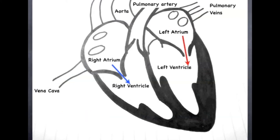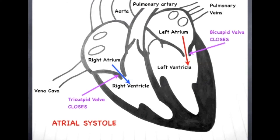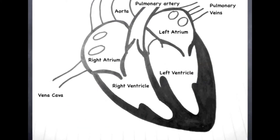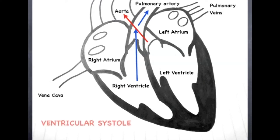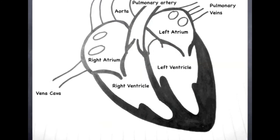To recap: first, the tricuspid and bicuspid valves close, which is responsible for the sound lub in the heartbeat. Afterwards, the semilunar valves close, which is responsible for the sound dub in the heartbeat. So you naturally hear lub-dub when listening.